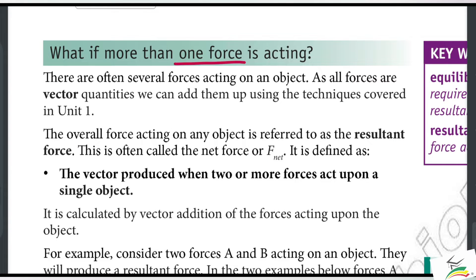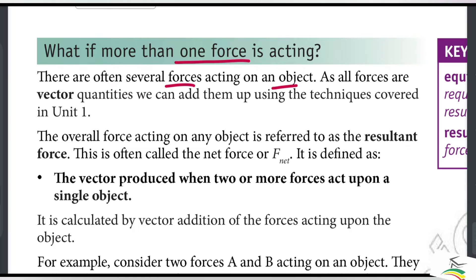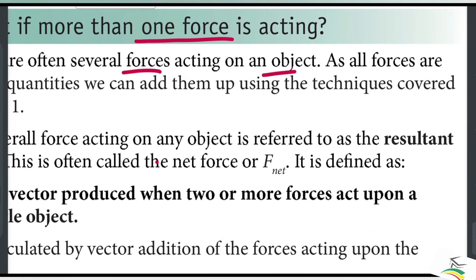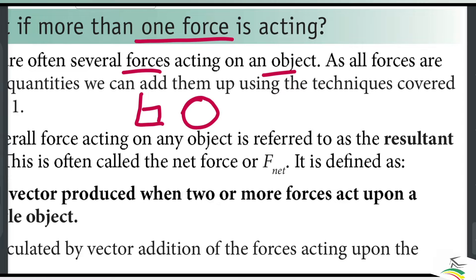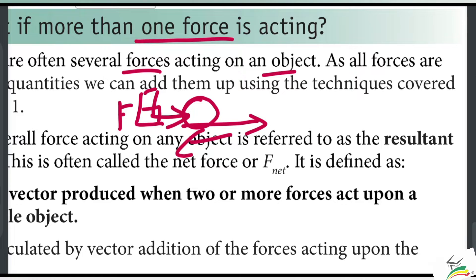What if more than one force is acting? If there is an object, there can be several forces acting on it. When multiple forces act upon an object, the object moves according to the level and direction of the combined force — it moves towards the net force.